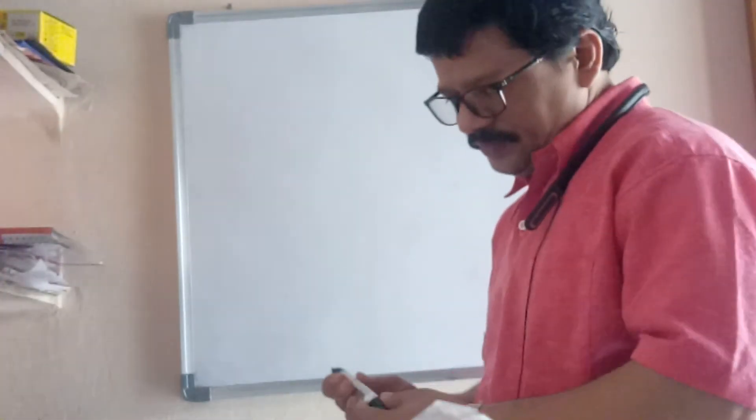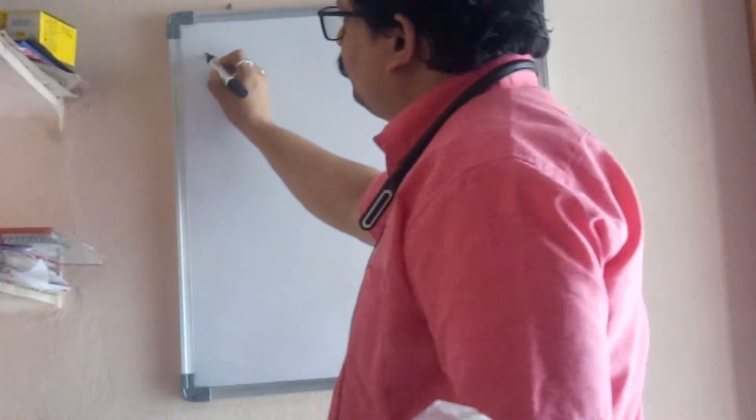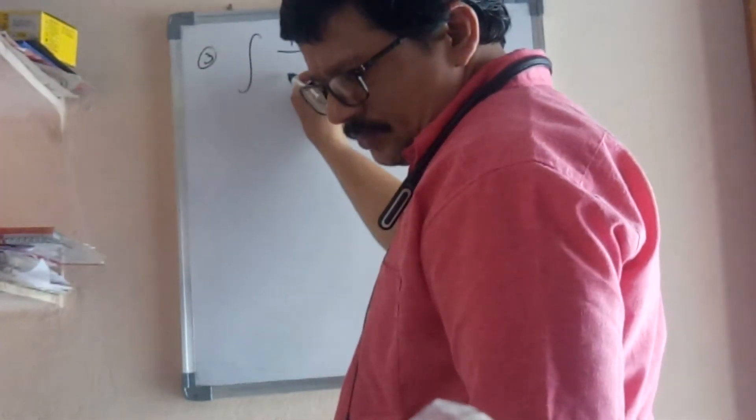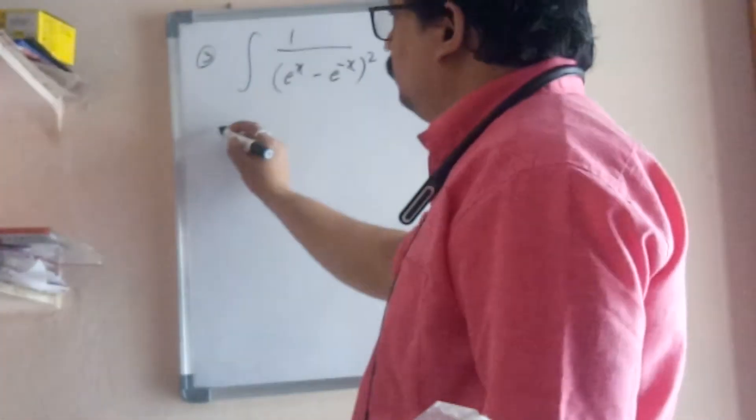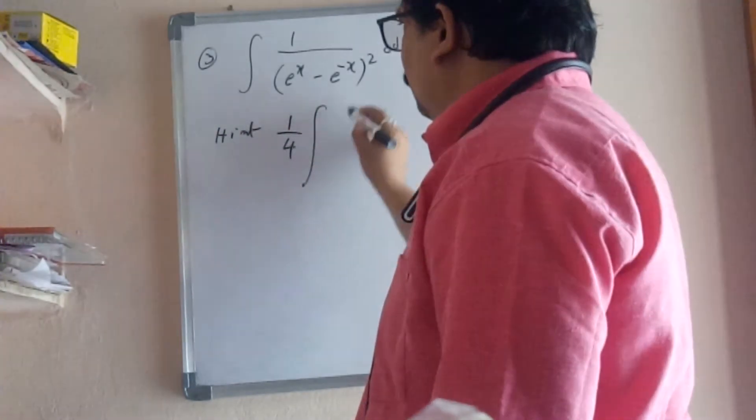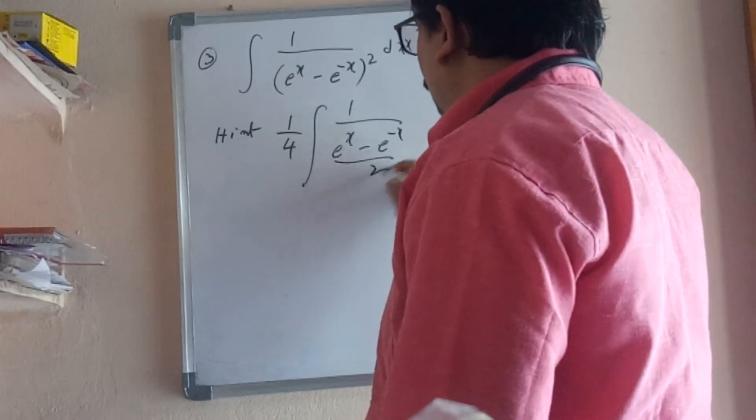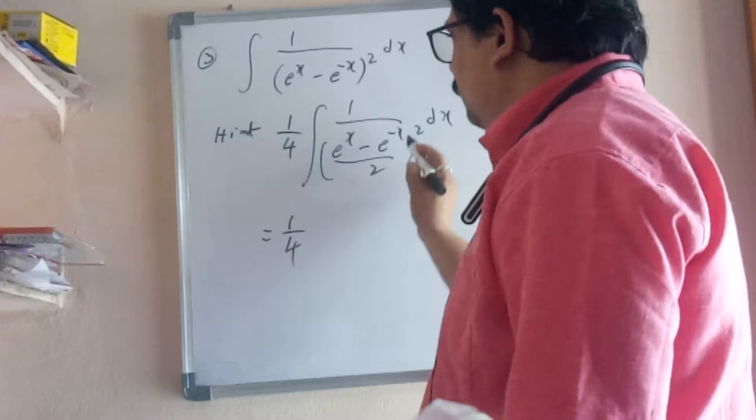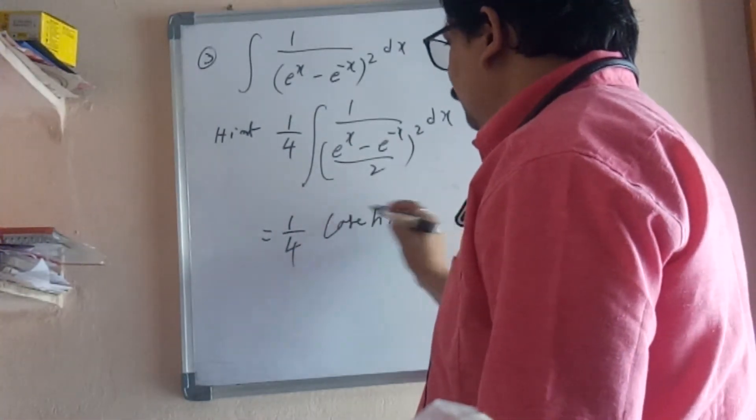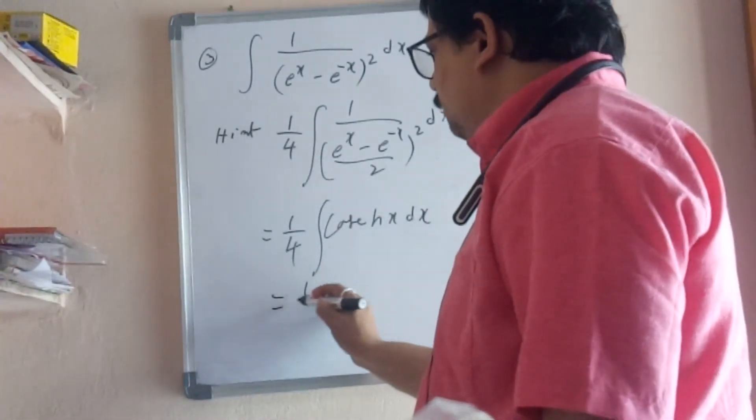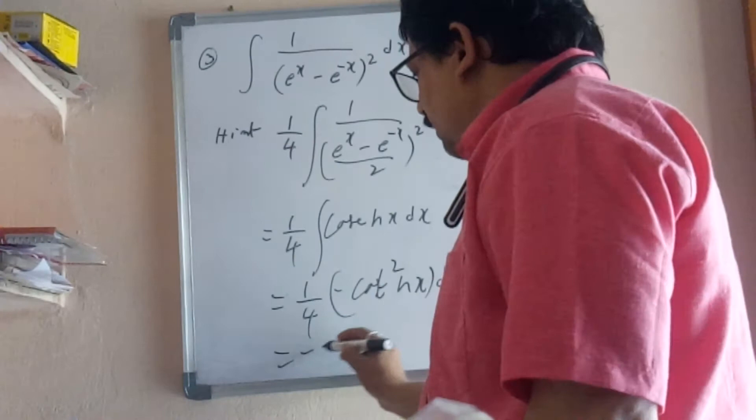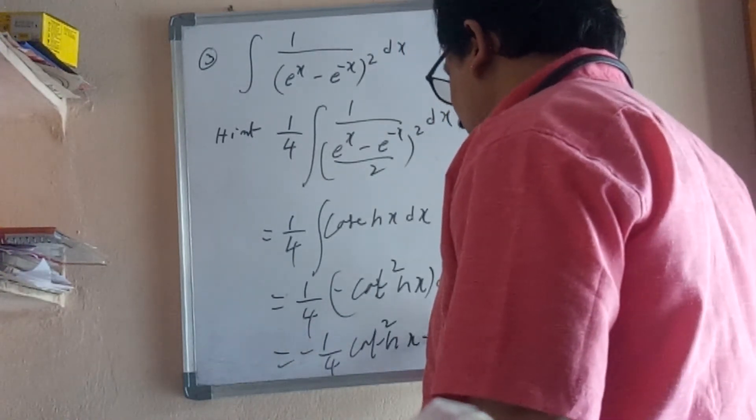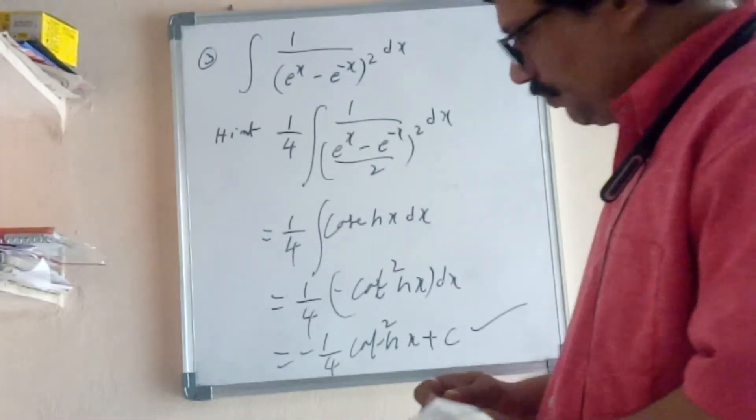Third problem: You know 1/4 integral of (e^x + e^(-x))²/2 dx equals 1/4 integral of cosh²(x) dx. You know cosh²(x) means 1/4 integral of (1 + cosh(2x))/2 dx. Final answer: -1/4 cot²(hx) + C.